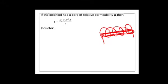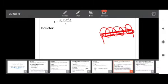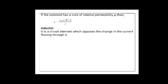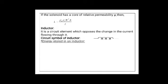Now let us see another important point — the inductor. An inductor is a circuit element which opposes the change in the current flowing through it, similar to a resistor or capacitor. The circuit symbol of an inductor is drawn as a coil.